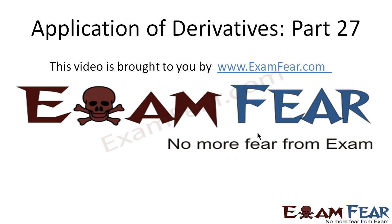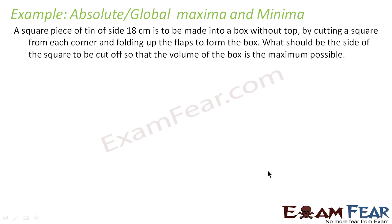Hello friends. This video on application of derivatives part 27 is brought to you by examfear.com — no more fear from exam. Before watching this video, please make sure that you have watched part 1 to part 26. A piece of square of side 18cm has to be made into a box without a top by cutting a square from each corner and folding the flap to form the box. What should be the side of the square to be cut so that the volume of the box is maximum?